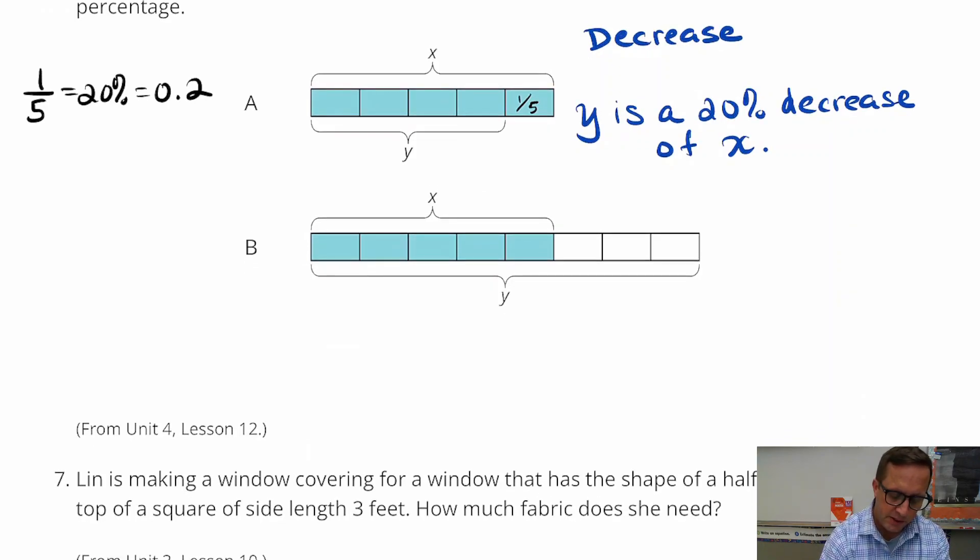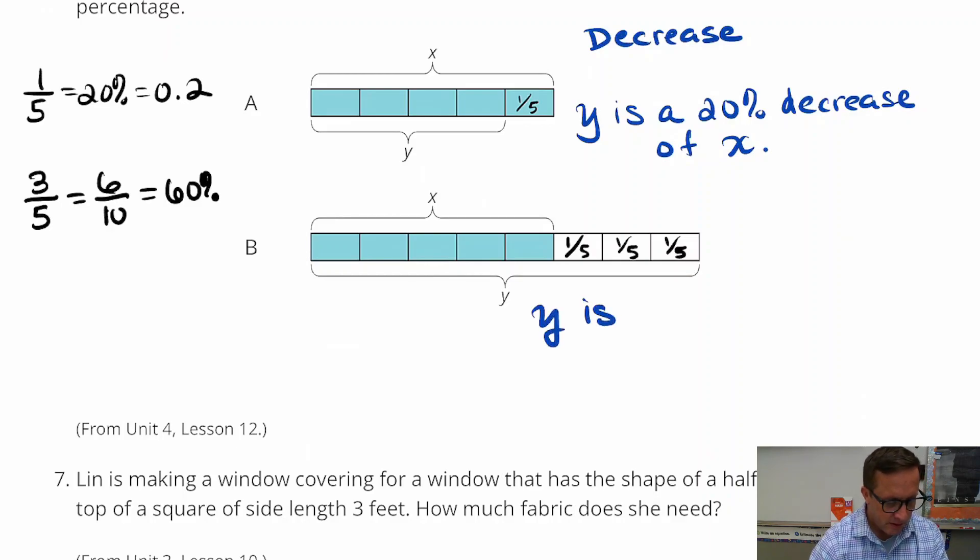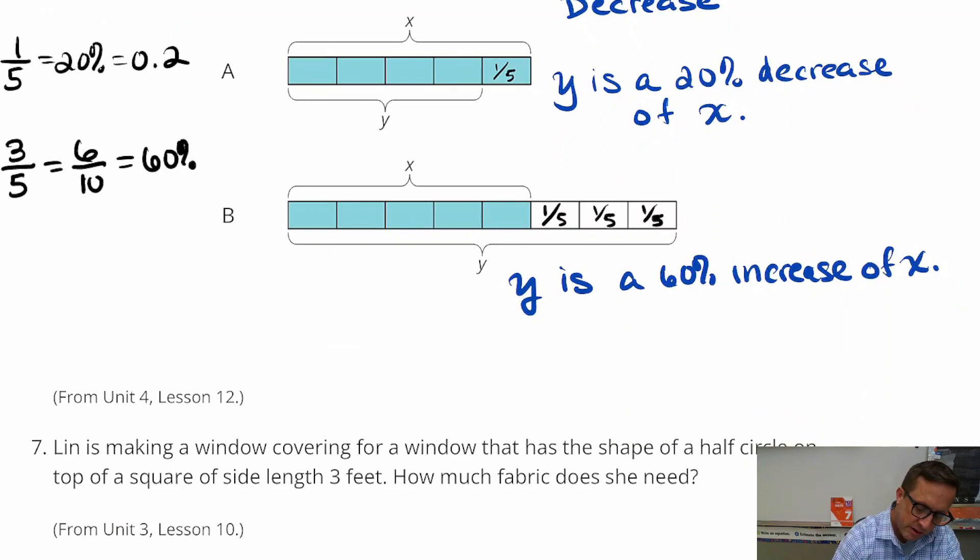And then on this one right here for b. Those are fifths again. And this is definitely an increase, it's growing, it's bigger. And that's three-fifths. And that three-fifths equals six-tenths which equals sixty percent. So we can say that y is sixty percent increase of x.